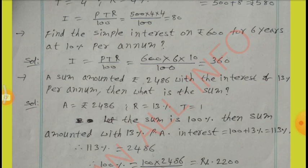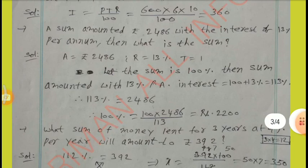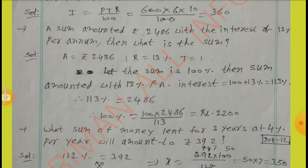A sum amounts to Rs.2,486 with interest of 13% per annum. What is the sum? Here, A equal to 2,486, R equal to 13%, T equal to 1 year. Let the sum be 100%. With 13% per annum interest, the amount equals 100 plus 13 equal to 113%. Therefore, 113% equal to 2,486, so 100% equals how much?